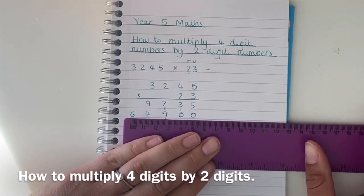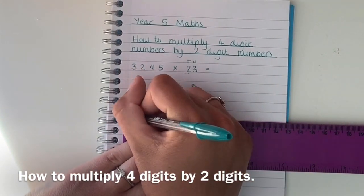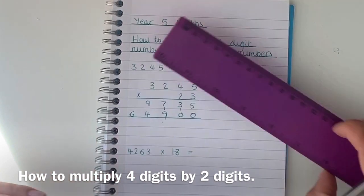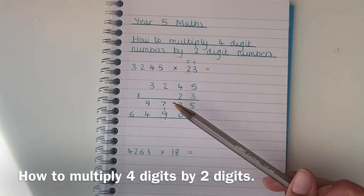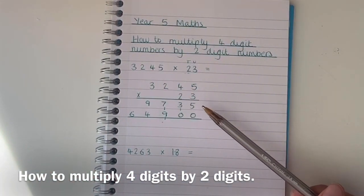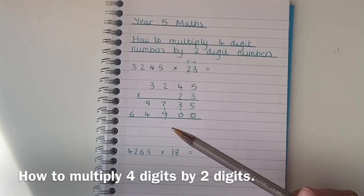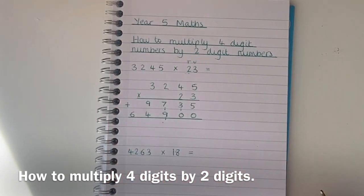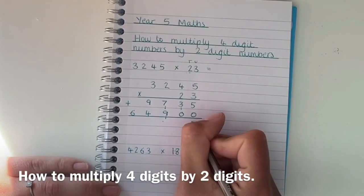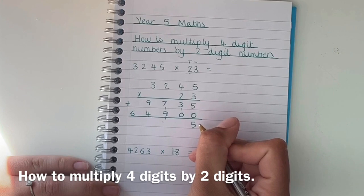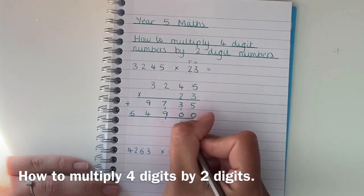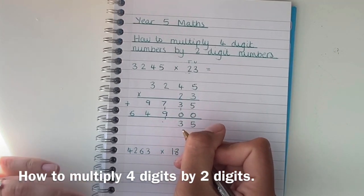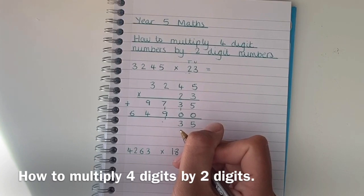Remember to set it out really neatly so it's clear for you when you come to the next part. So now I've worked out multiplying it by 3 and I've also multiplied it by 20. I need to add these two numbers together to get my final result. So 5 add zero is 5. 3 add zero is 3. 9 add 7 is 16.